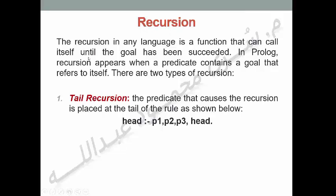Recursion in any language is a function that can call itself until the goal has been achieved. العودة في أي لغة هي عبارة عن function يمكنها استدعاء نفسها لحين تحقيق الهدف. In Prolog, recursion appears when a predicate contains a goal that refers to itself. هنالك نوعين من العودة.